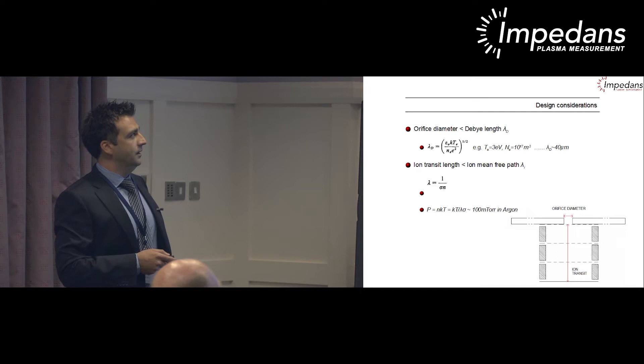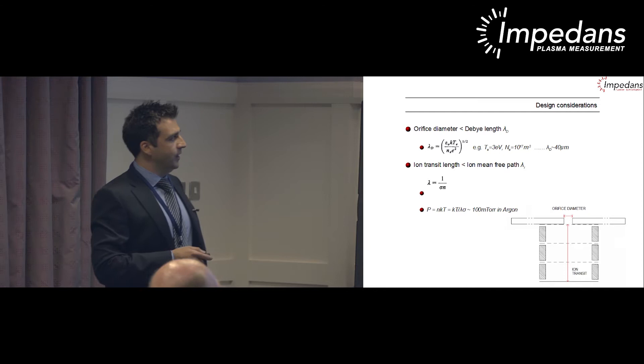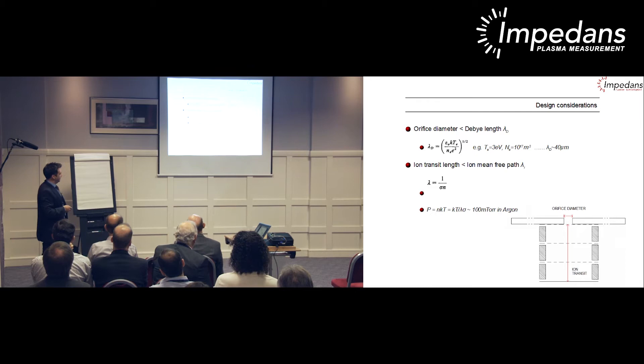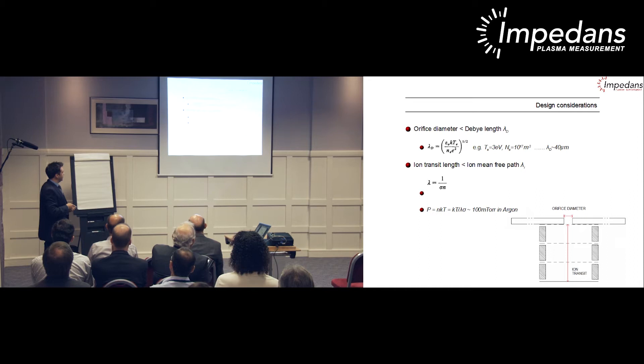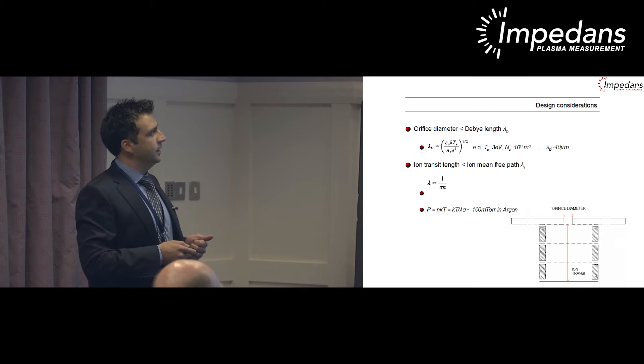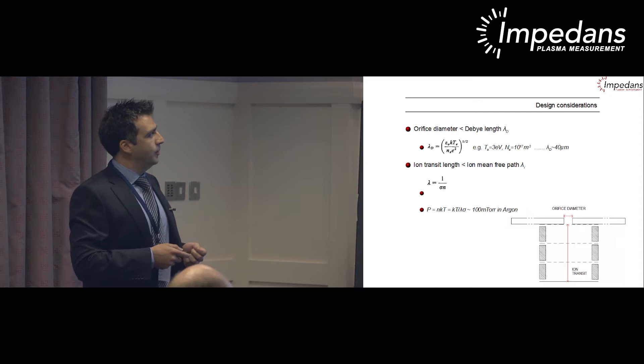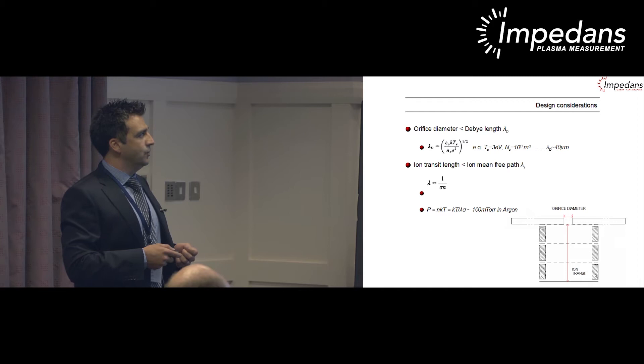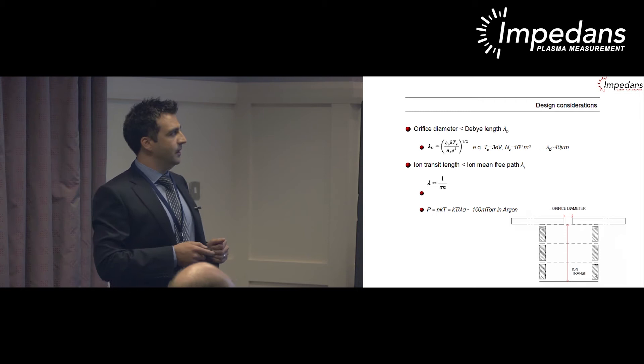The second design consideration is ion transit distance through the analyzer. Collisions with background gas as ions pass through would distort the actual ion energy distribution. The mean free path in the plasma is inversely proportional to the product of the ion-neutral collision cross-section and the background gas density. For this particular device, operation up to about 100 millitorr in argon—the worst case, around 5 to 10 pascals—is possible without differential pumping.